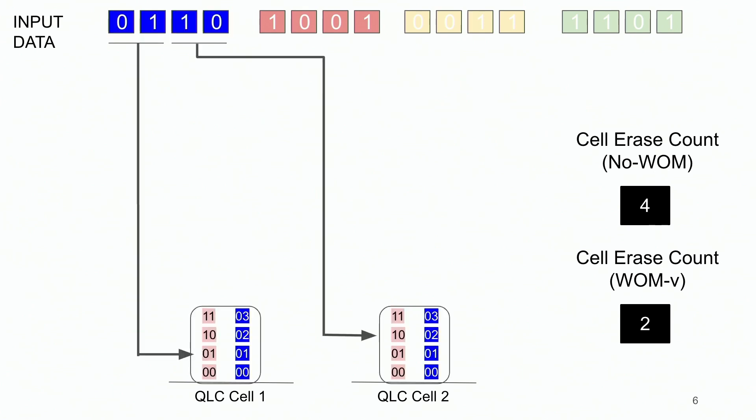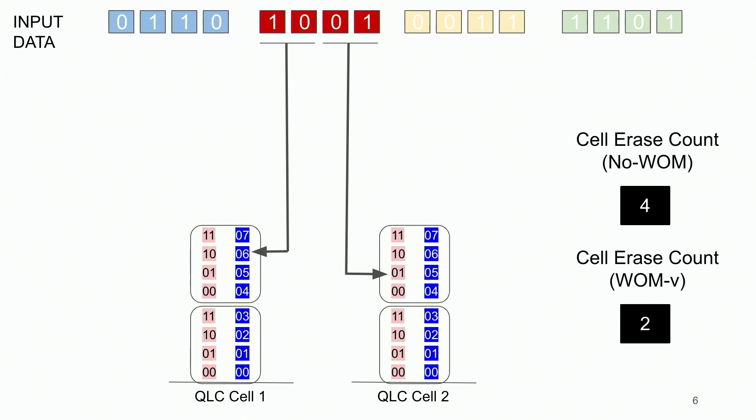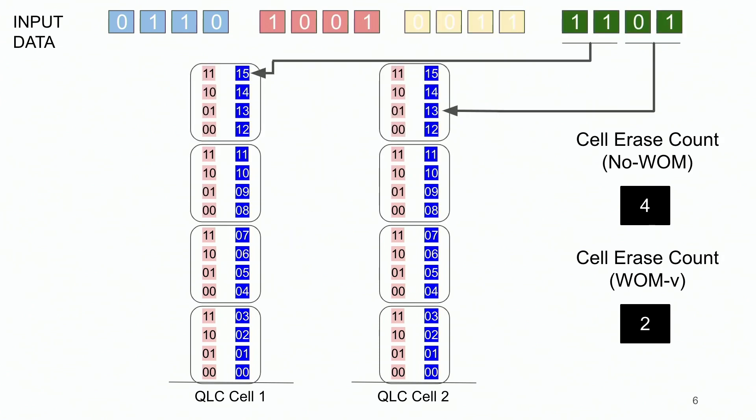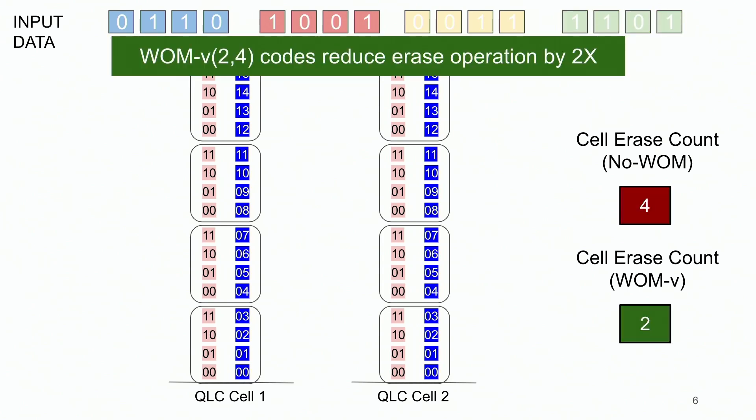Next, each input word is encoded and written to two separate QLC cells, cell one and cell two, at appropriate voltage levels. On writing the second word, the previously existing data does not have to be erased, but it can be overwritten by increasing the voltage level to the next generation. This is followed by the third write and the fourth write without any additional erase operations. Hence, using WOM V(2,4) codes, we are able to reduce the erase operation by a factor of two.